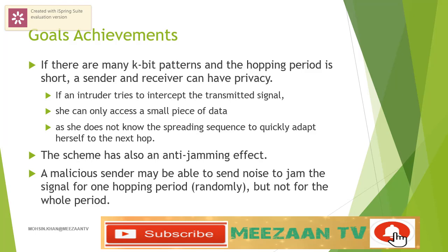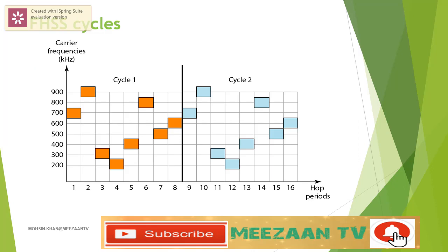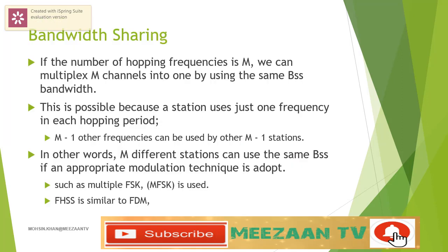The scheme also has an anti-jamming effect. A malicious sender may be able to send noise to jam the signal for one hopping period, but not for the whole period. The figure shows how the goals may be achieved — if we see the first cycle the frequencies are different, and at the second cycle totally different frequencies are selected for hopping. If the number of hopping frequencies is M, we can multiplex M channels into one by using the same BSS bandwidth. This is possible because a station uses just one frequency in each hopping period, and M-1 other frequencies can be used by the other M-1 stations. In other words, M-1 different stations can use the same BSS if an appropriate modulation technique such as multiple FSK is used.